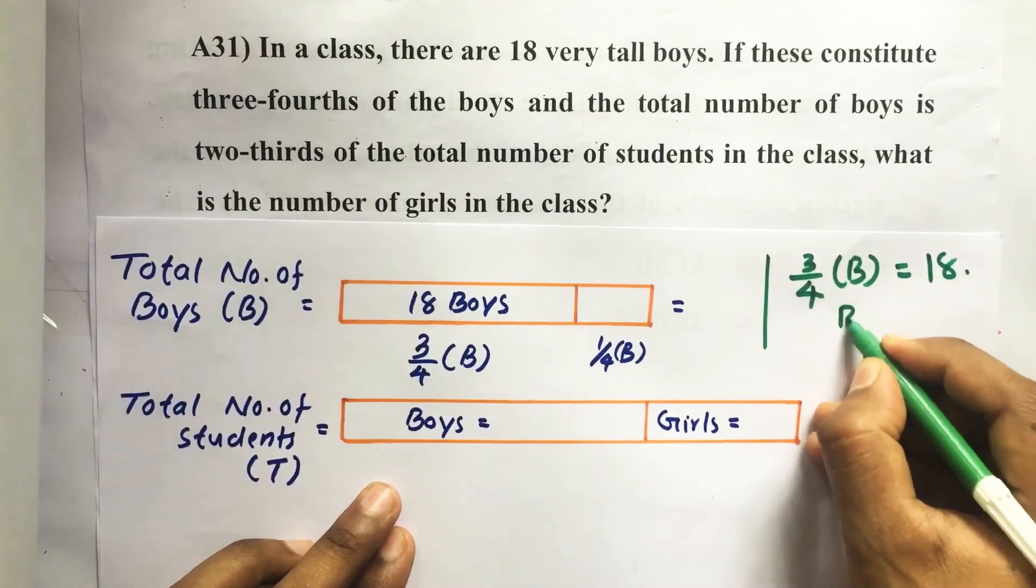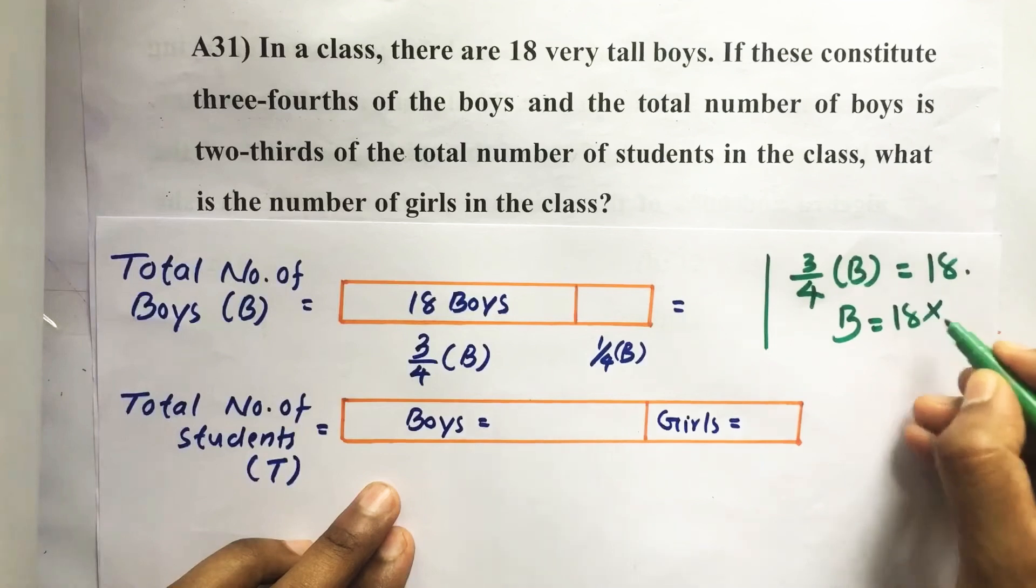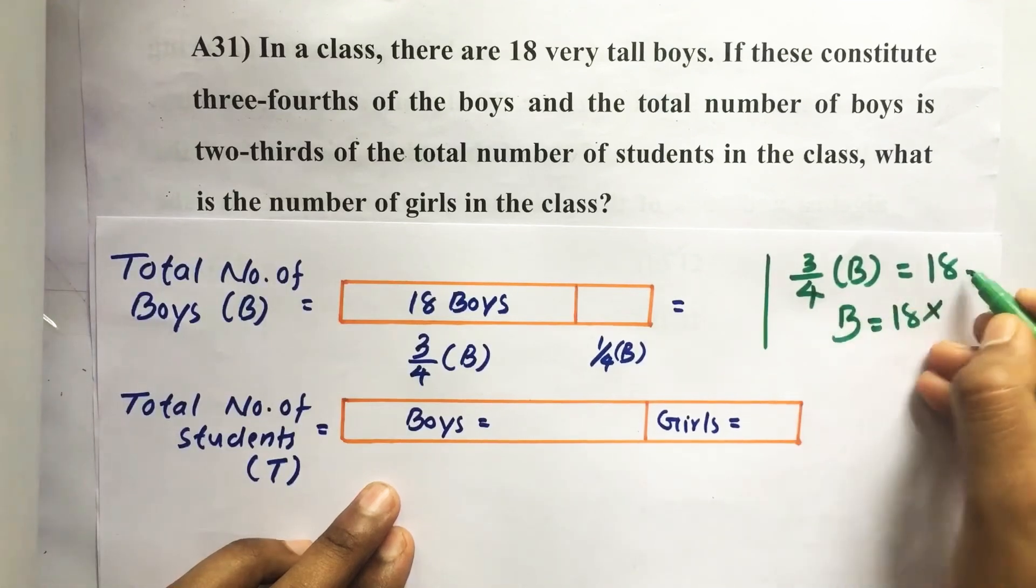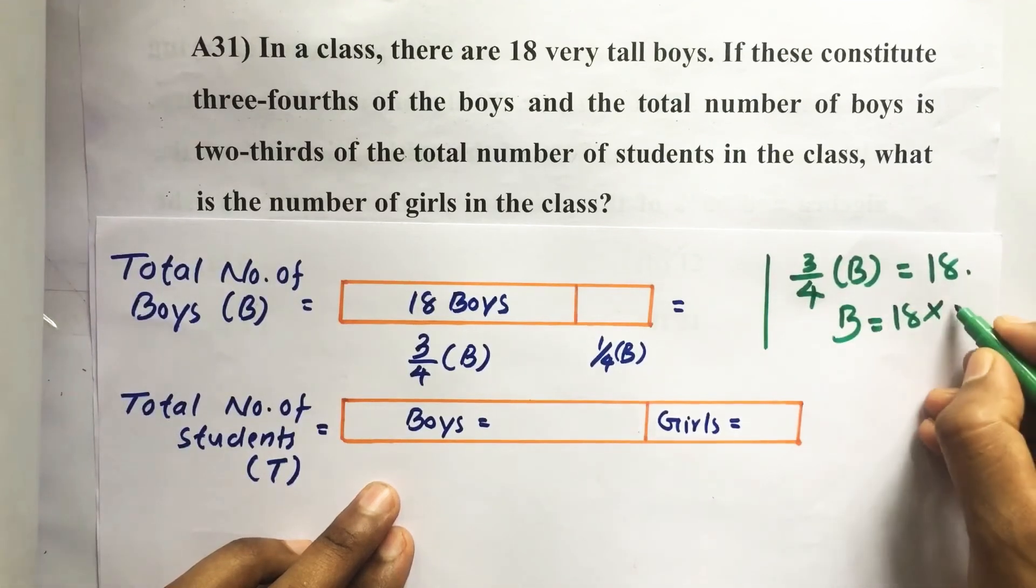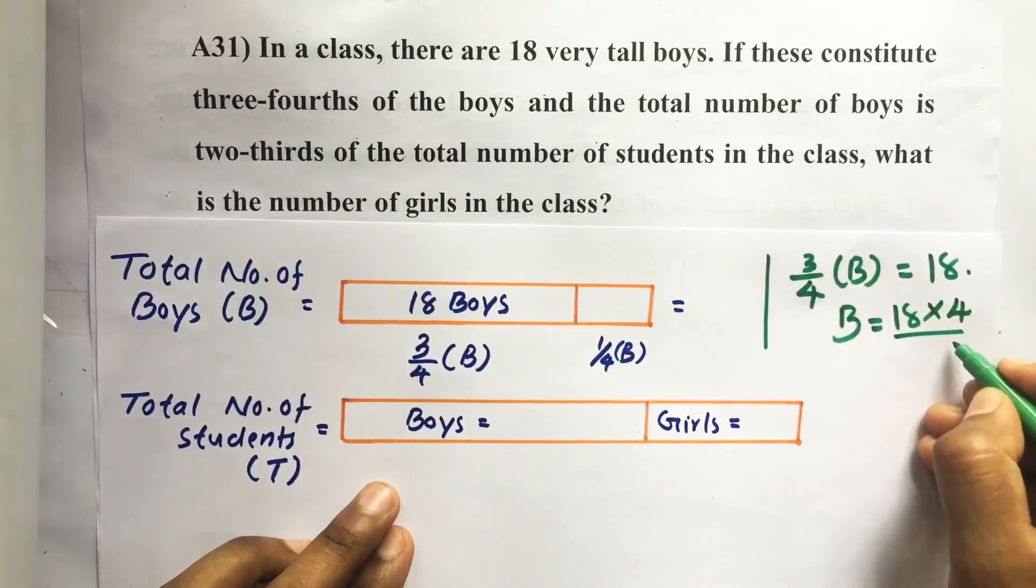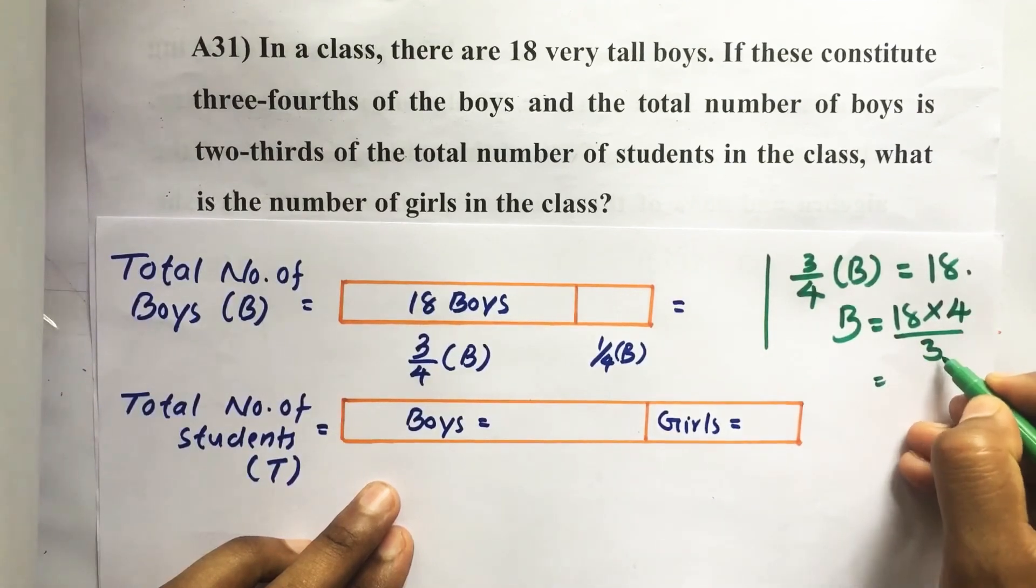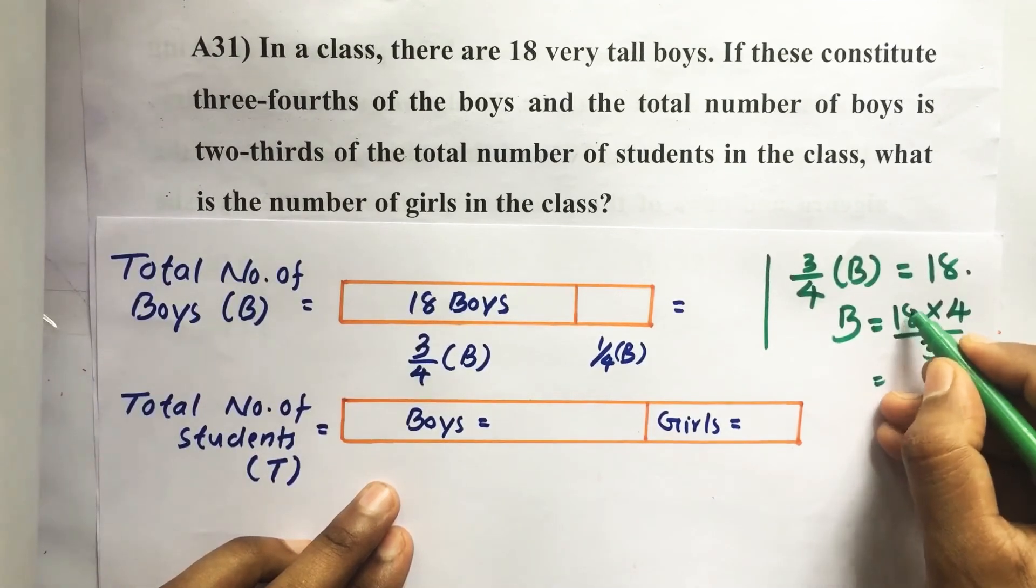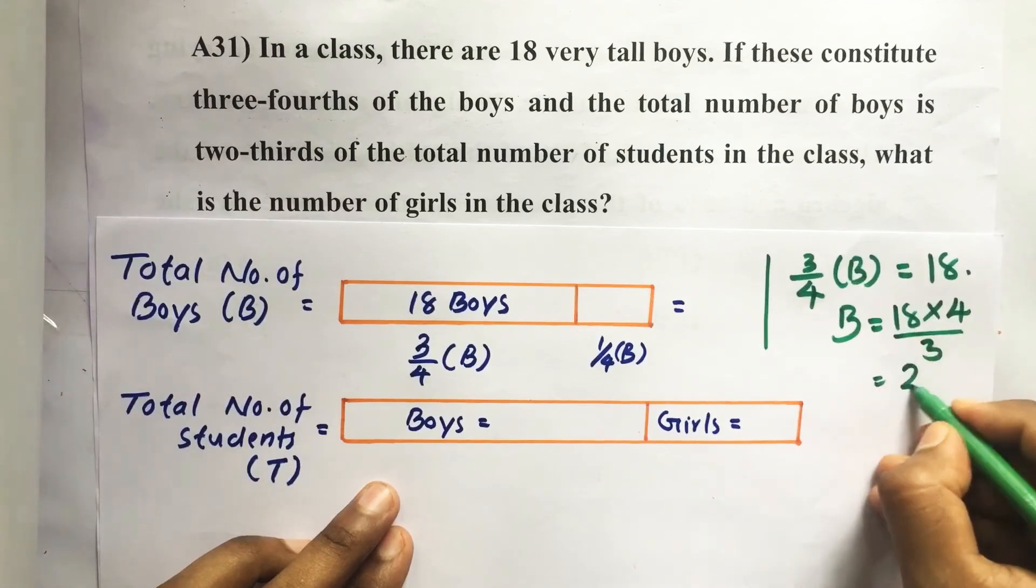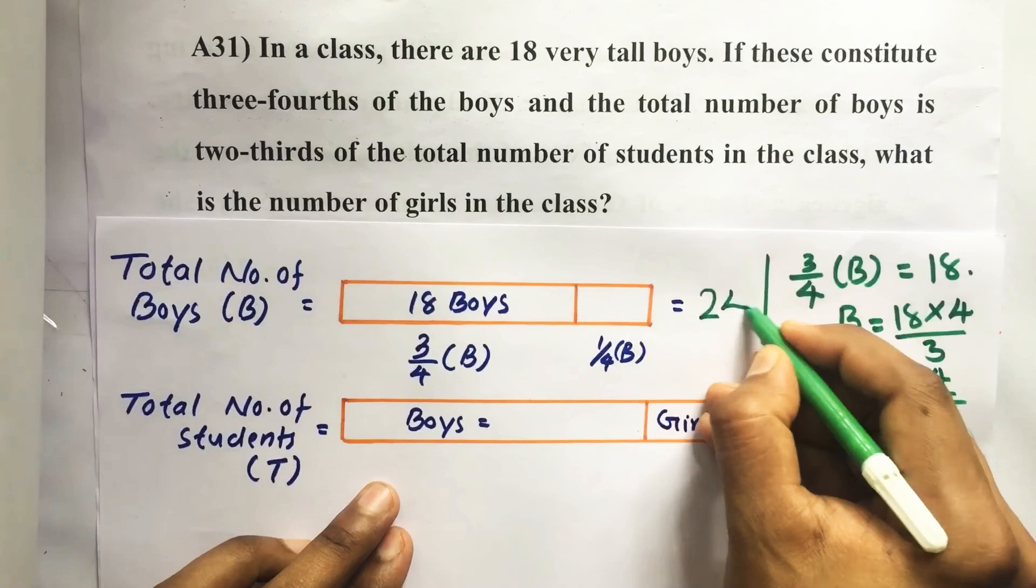From this, total number of boys equal to 18—I am taking this four to the right side then it becomes multiplied by four, then I am taking three to the right side then it becomes divided by three. So 18 into four divided by three. Three sixes are 18, so six into four, twenty-four. After simplifying we get 24. Total number of boys equal to 24.